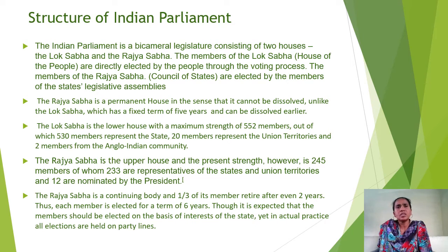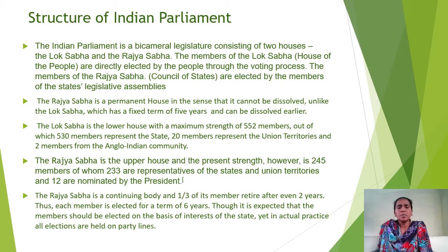A bicameral legislature is one having two houses — a lower house and an upper house — which consists of Lok Sabha and Rajya Sabha. The members of the lower house, the House of People, are directly elected by the people through voting and general elections. The members of Rajya Sabha, the Council of States, are elected by the members of state legislative assemblies. The Rajya Sabha is a permanent house in the sense that it cannot be dissolved, unlike Lok Sabha which has a fixed term of 5 years. The Lok Sabha has a maximum strength of 552 members — 530 represent the states, 20 represent the union territories, and 2 are from the Anglo-Indian community.